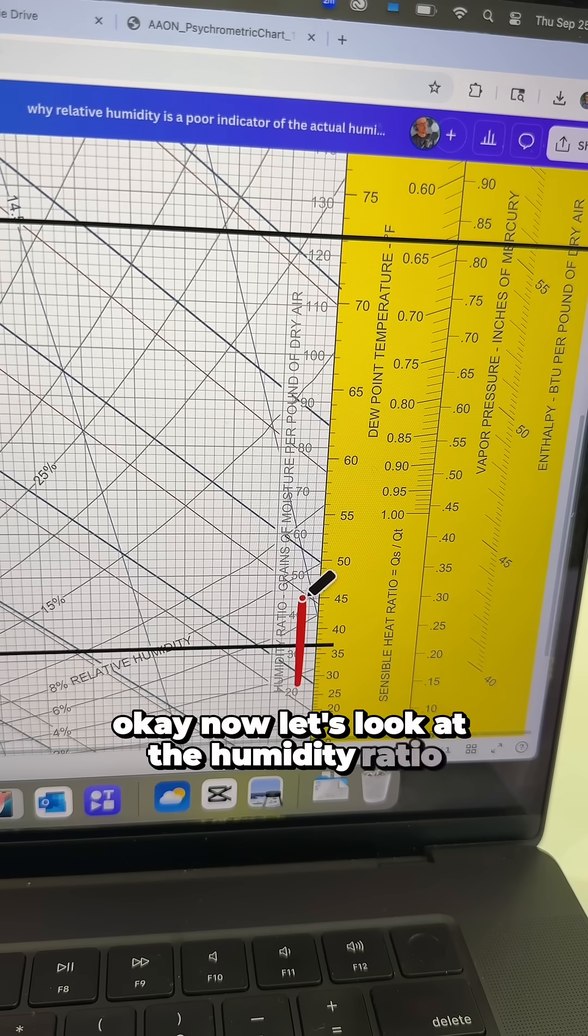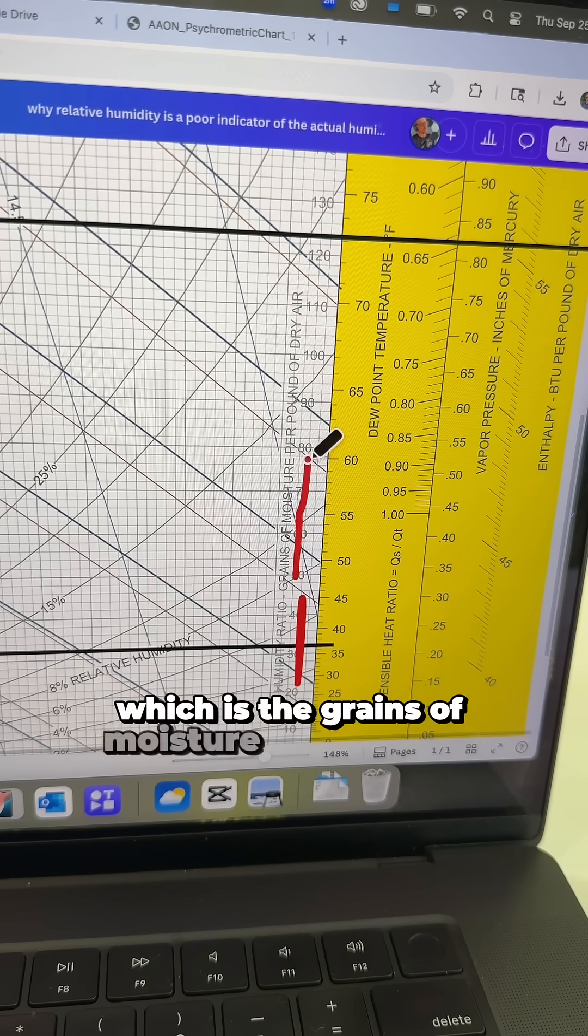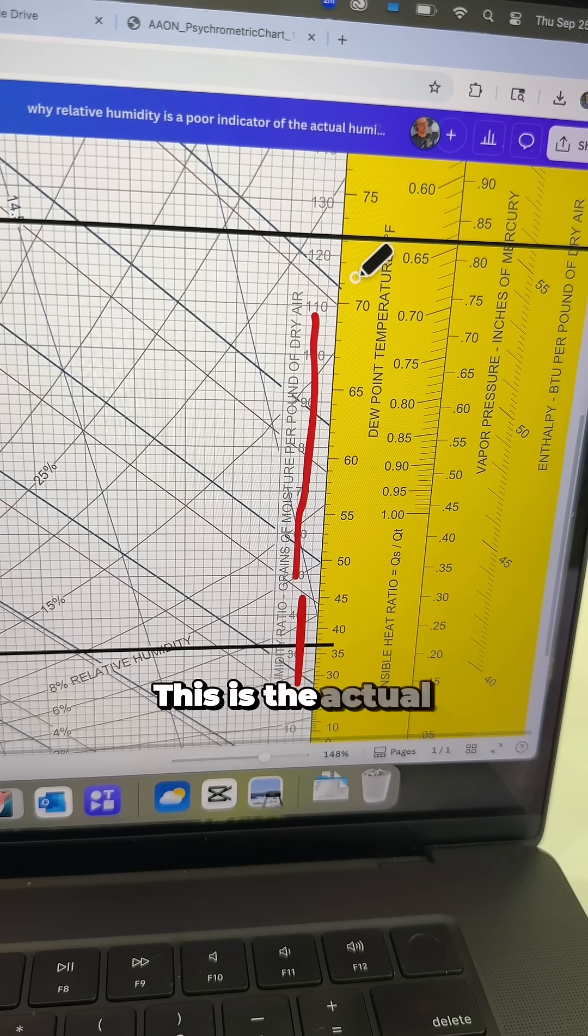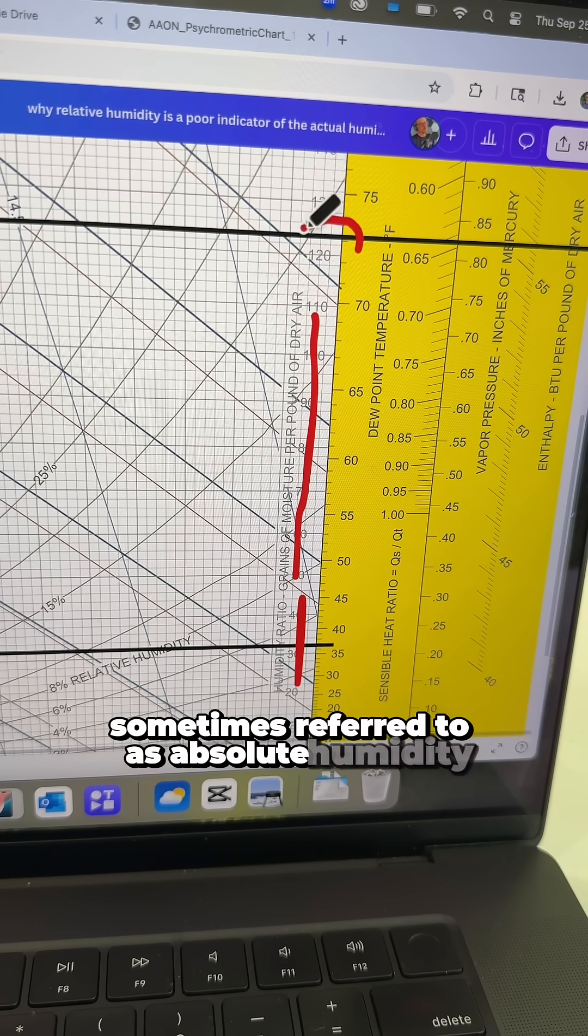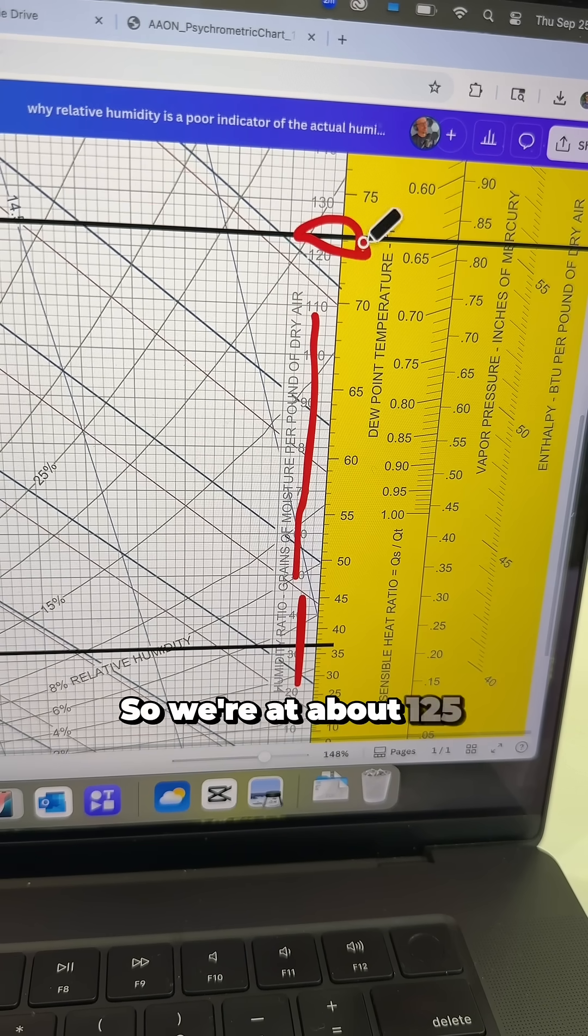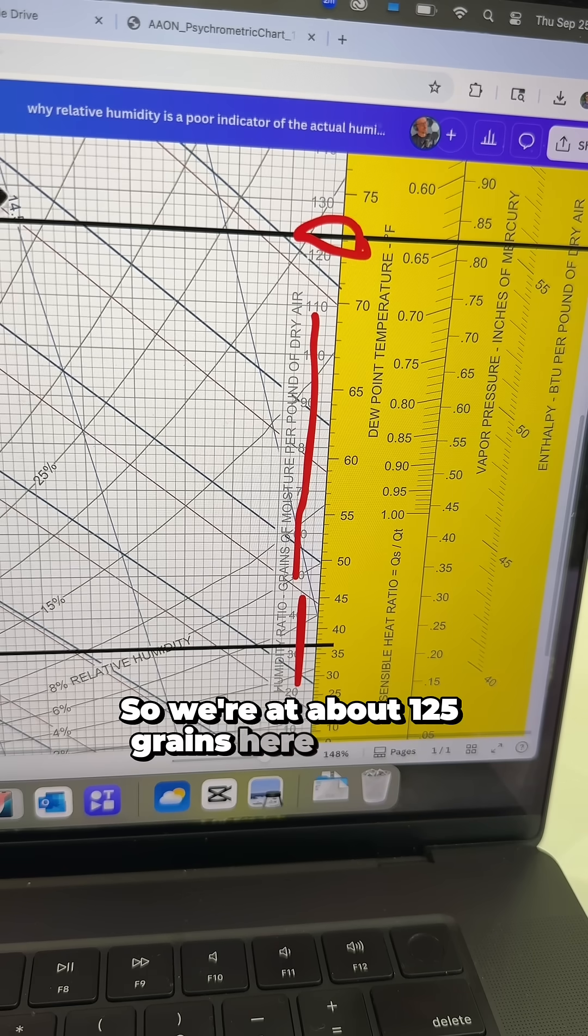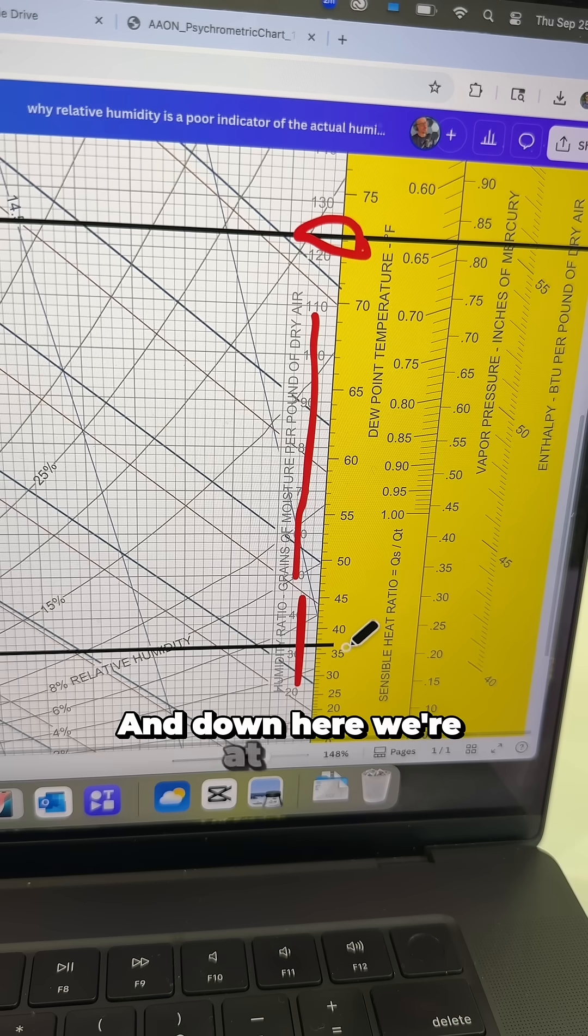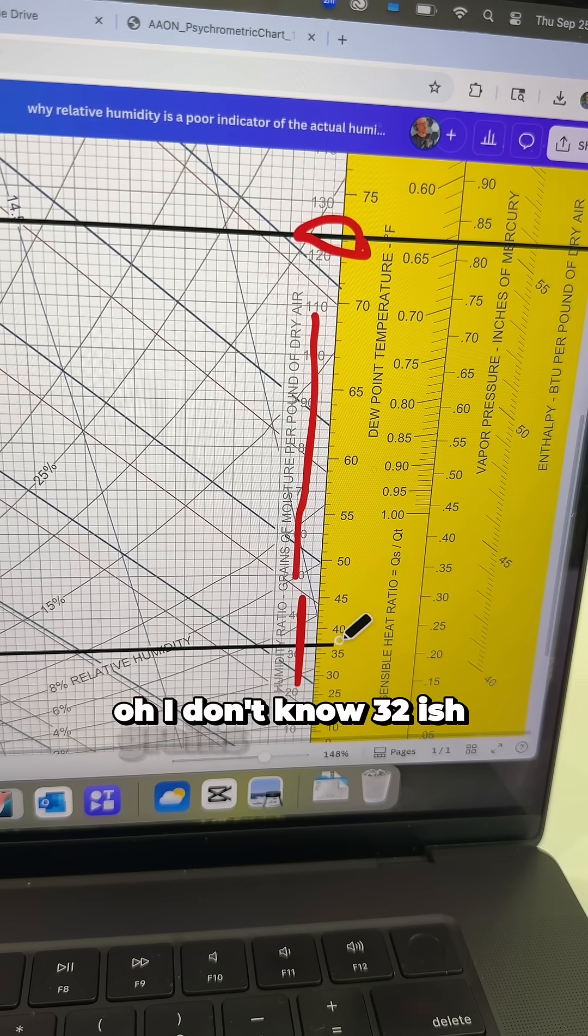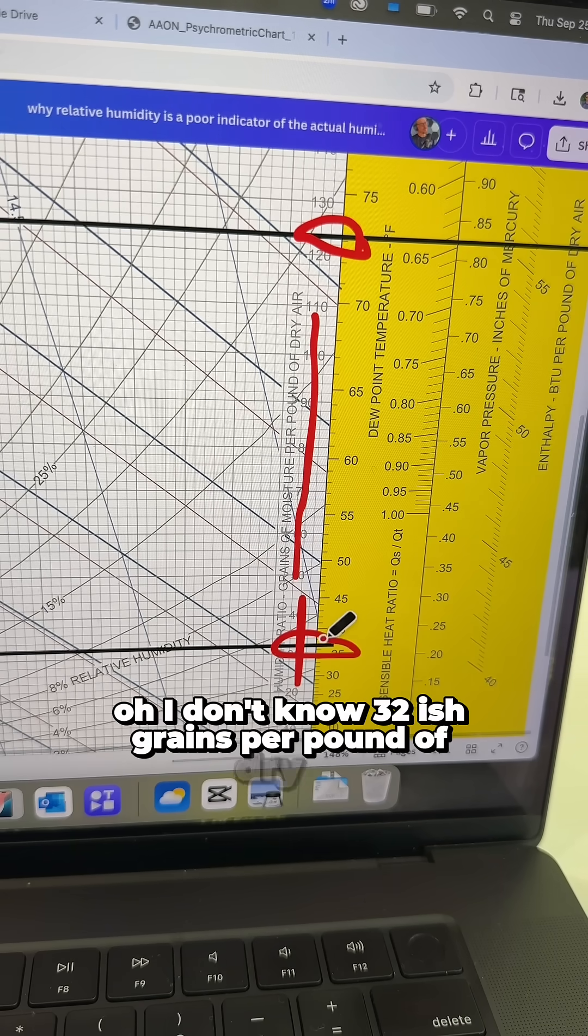Now, let's look at the humidity ratio, which is the grains of moisture per pound of dry air. This is the actual amount of moisture in the air in terms of grains, sometimes referred to as absolute humidity. So, we're at about 125 grains here at 95, 50%. And down here, we're at about, oh, I don't know, 32-ish grains per pound of dry air.